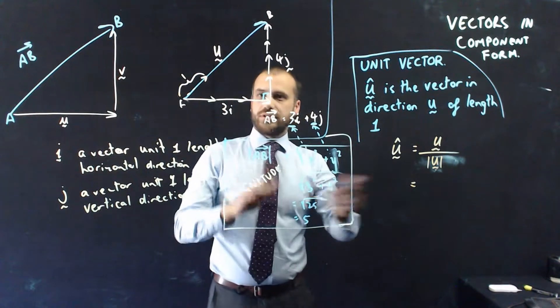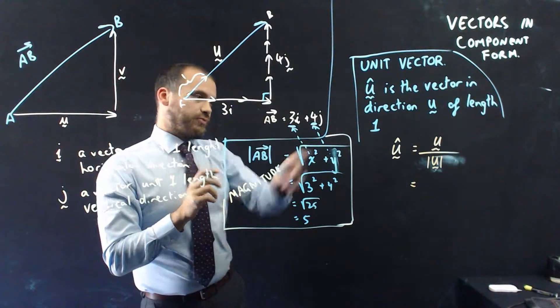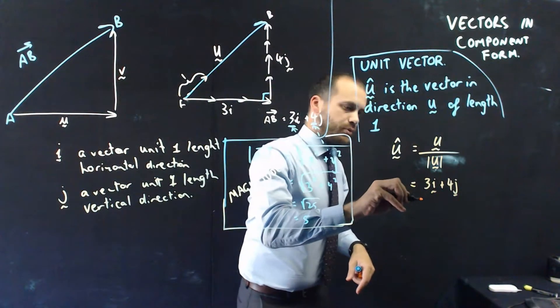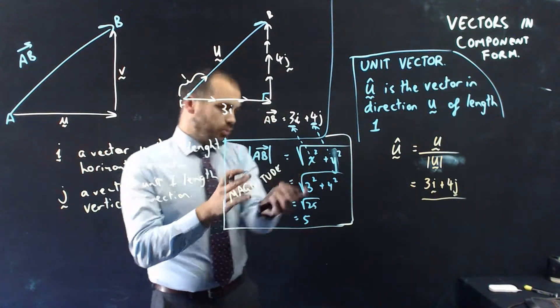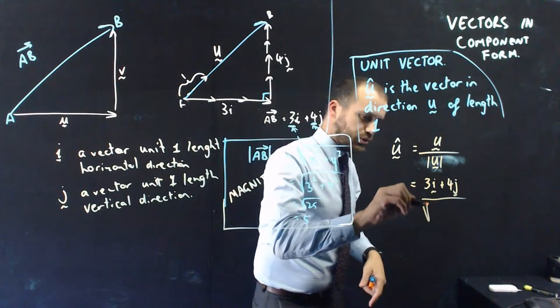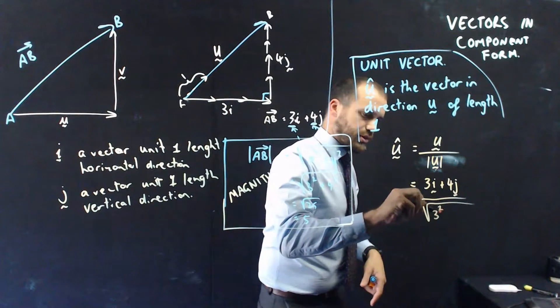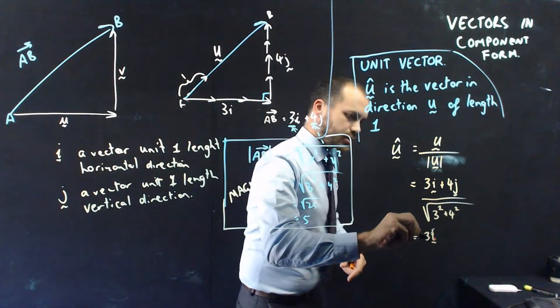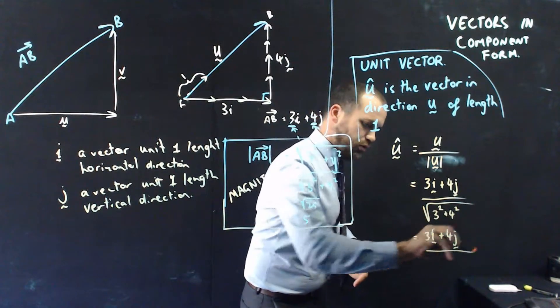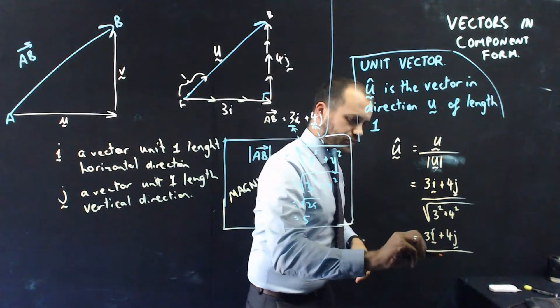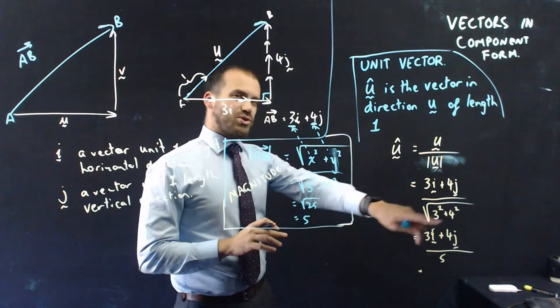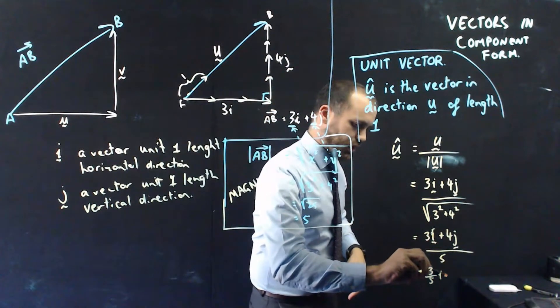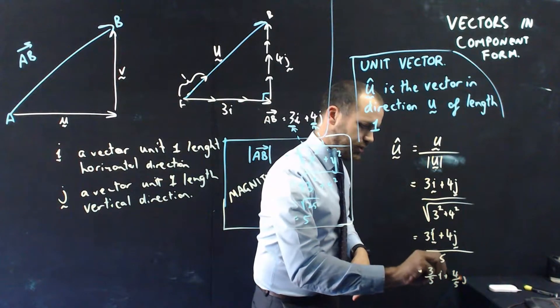All right. So we know what the vector is. The vector is 3i plus 4j. And then we're going to divide it by the magnitude of the vector, which we've already calculated here. But I'll just do it again. 3 squared plus 4 squared. So we know that that's going to give us 3i plus 4j over 5. And it's not really... That's sort of correct, but it's not really polite to leave it like that. We should put it into its components. 3 fifths i plus 4 fifths j.